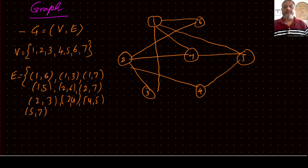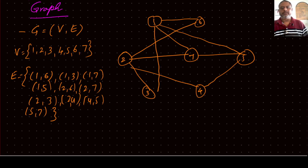So in total there are 10 edges in this graph. Counting them: 1, 2, 3, 4, 5, 6, 7, 8, 9, and 10. These are the 10 edges we have.